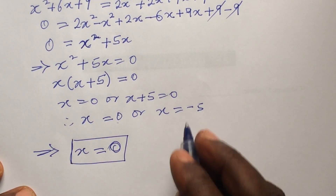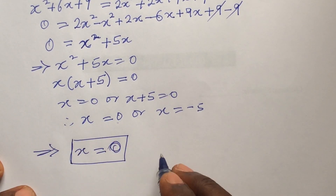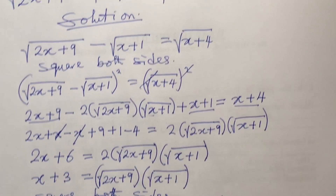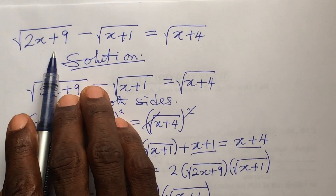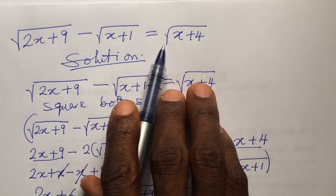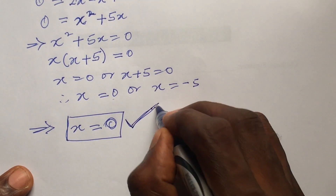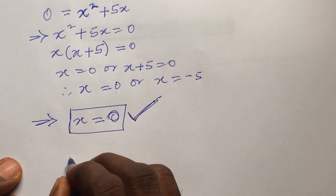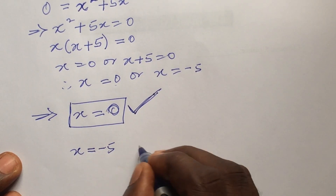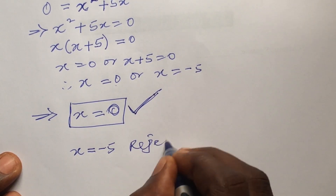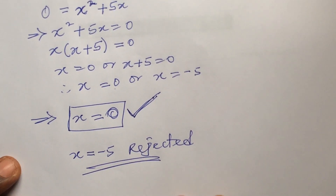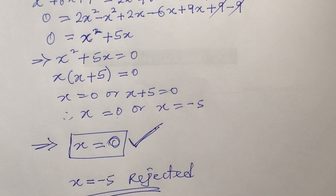This implies that x equals 0 is the correct answer. If we check x equals 0 in the original equation — √(2(0)+9) minus √(0+1) equals √(0+4) — it checks out. So x equals 0 is the accepted solution, while x equals negative 5 is rejected. Thanks for watching Live Mass TV. Drop your questions in the comment section. We love you so much, bye for now.